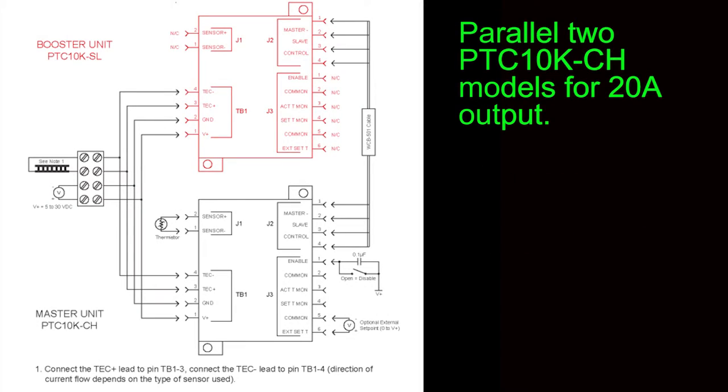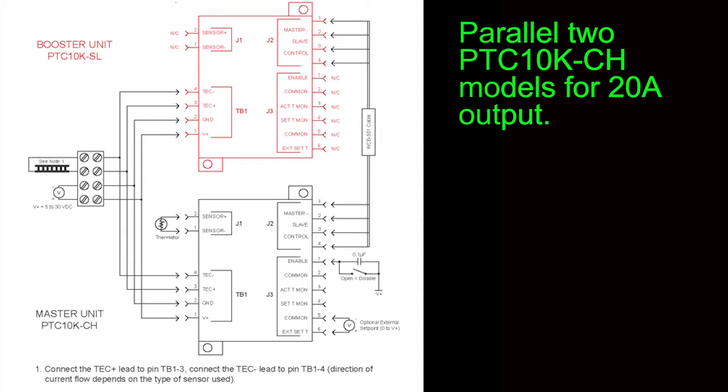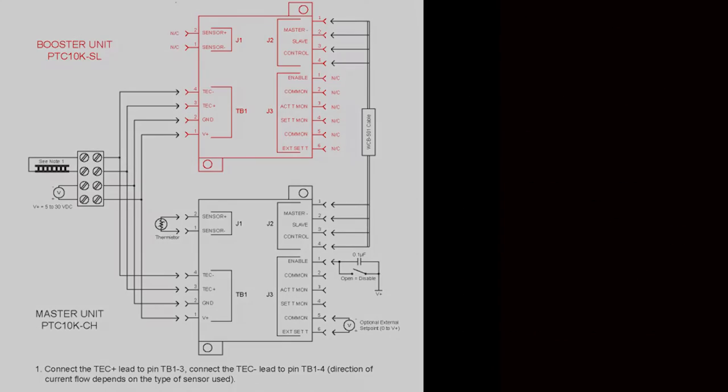The PTCs are designed to be very flexible. For example, two can be set up in master booster configuration to drive up to 20 amps. Make sure that the power supply connections are starred. This means separate power lines are run to each controller. Daisy chaining power supply inputs causes ground loops and voltage drops. This applies to all products.